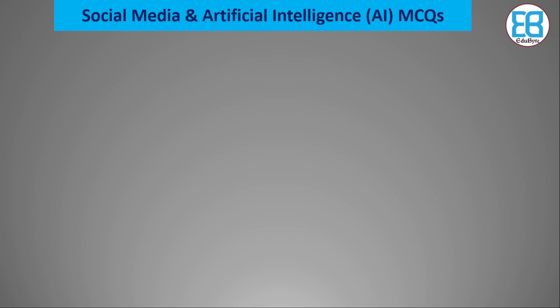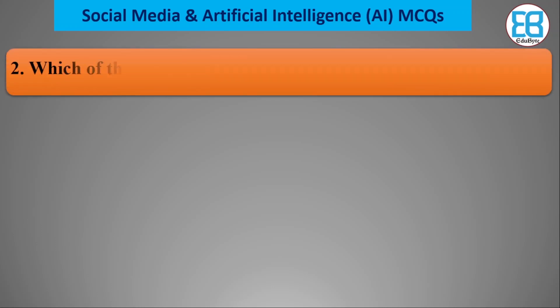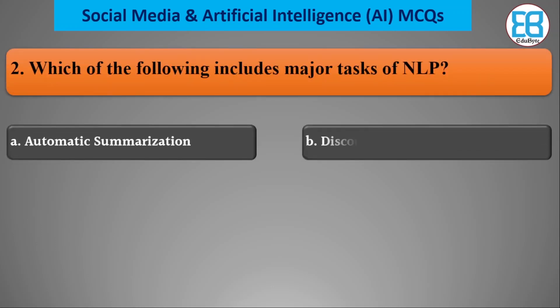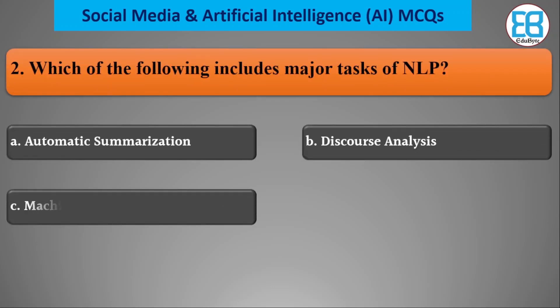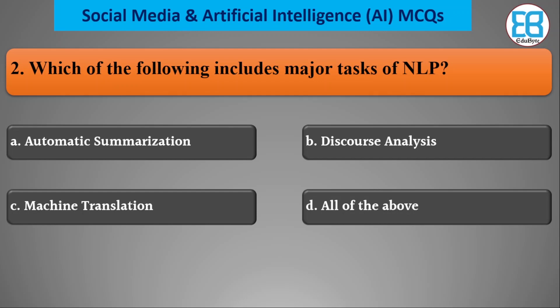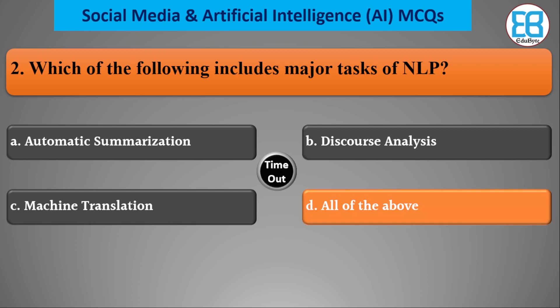Which of the following includes methods and tasks of NLP? Options include automatic summarization, discourse analysis, and machine translation. The correct option is all of the above.